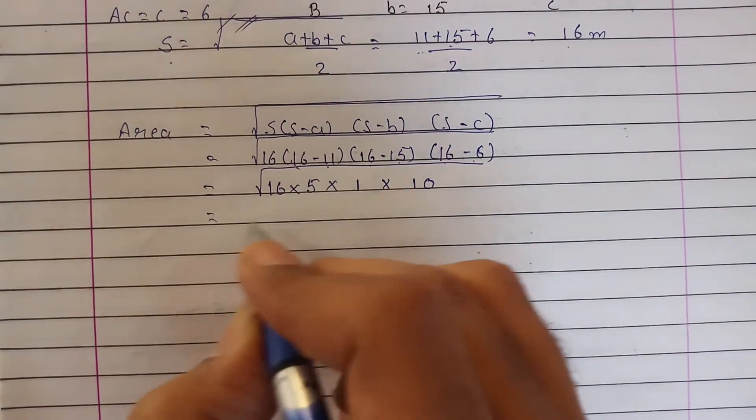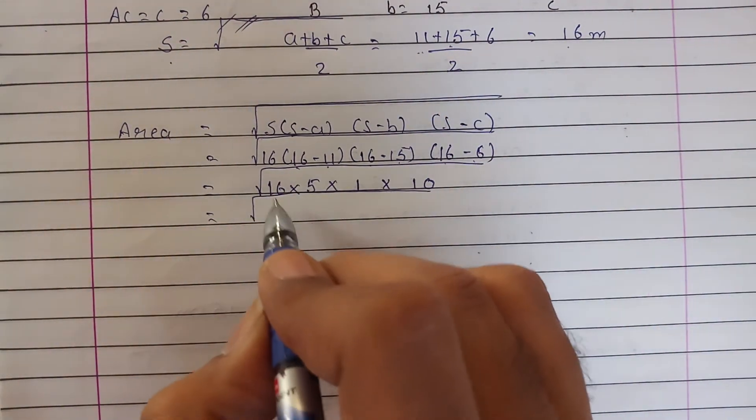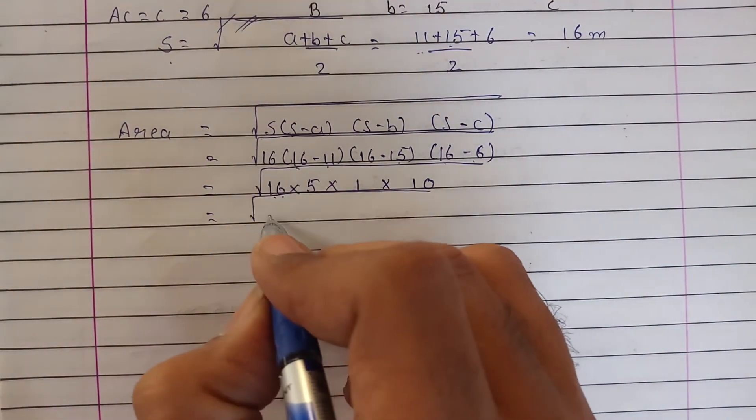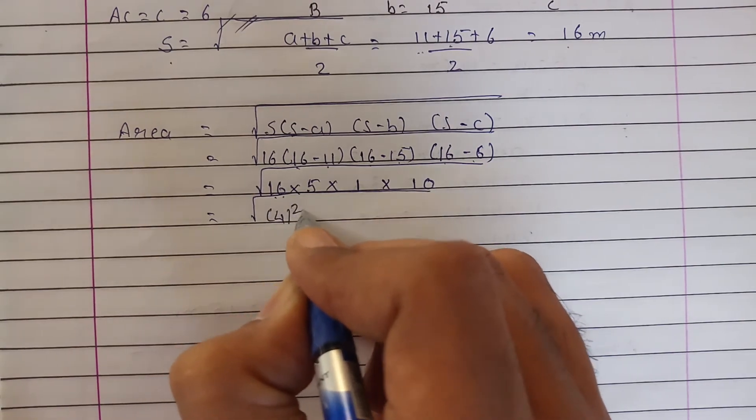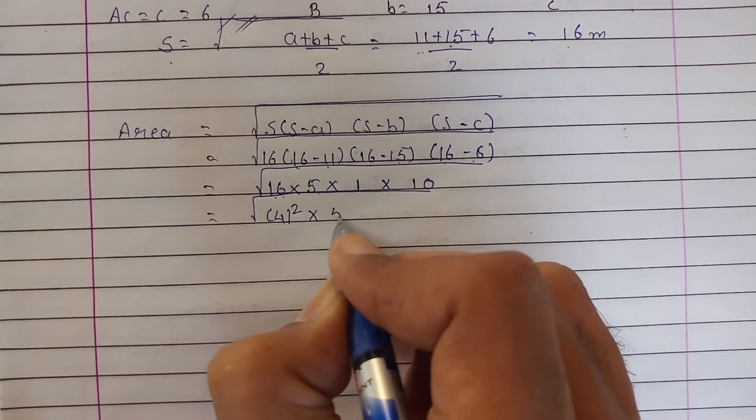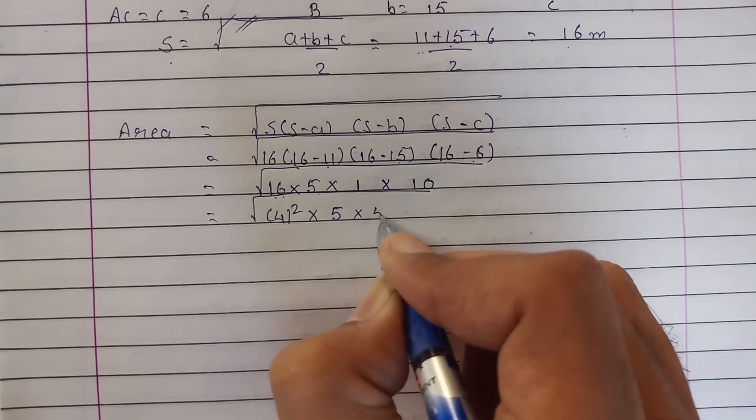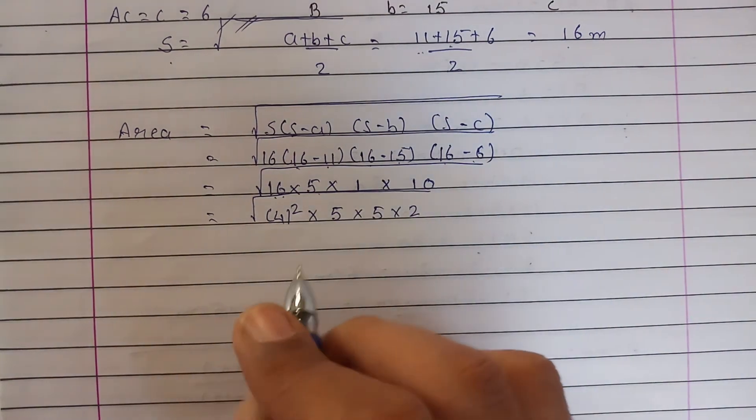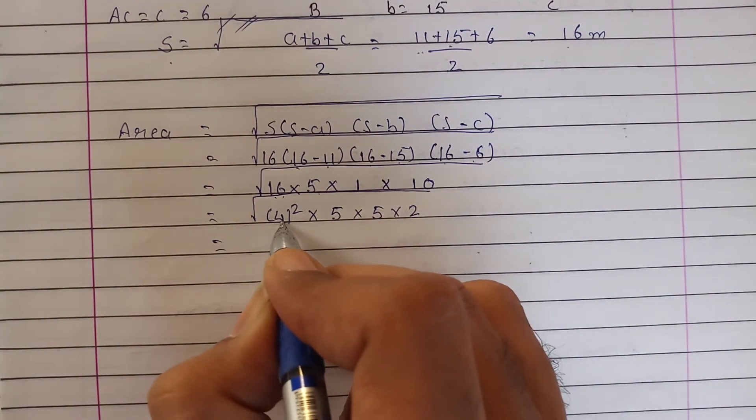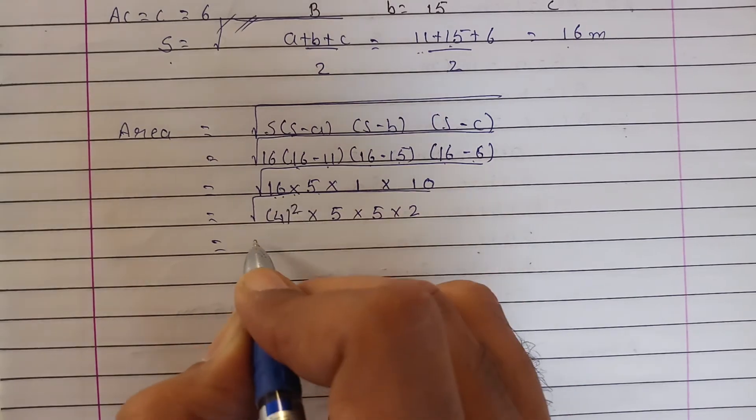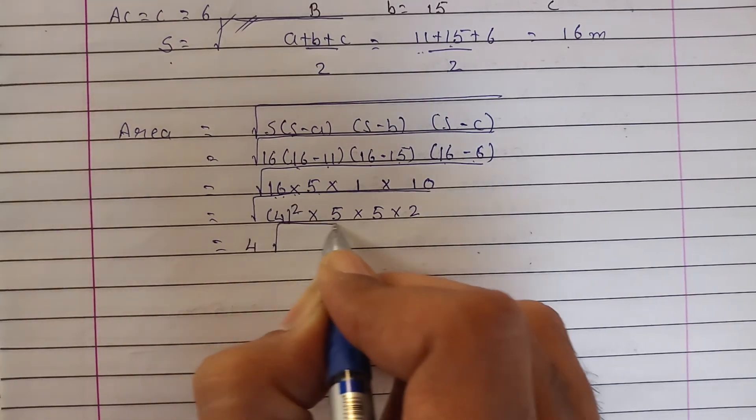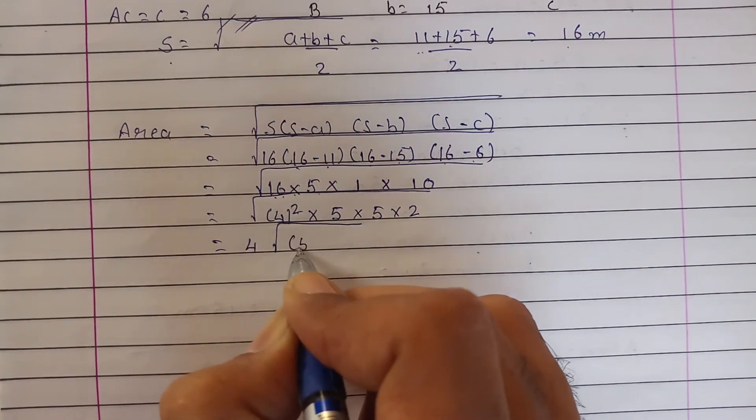Now solving it further, this is 16, which can be written as 4². 5×1 = 5, and 10 can be written as 5×2. So 4 comes out of the square root, then 5×5 which is 5².